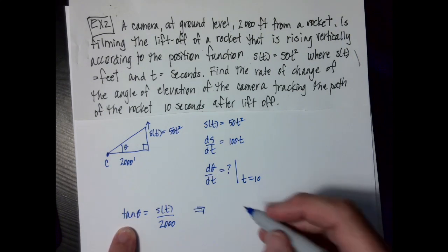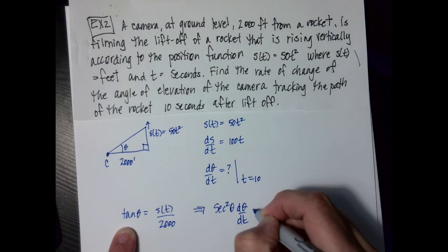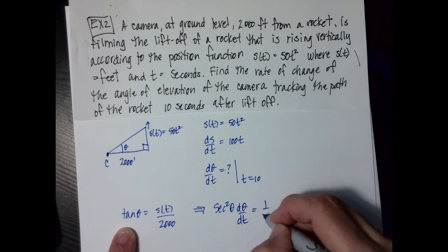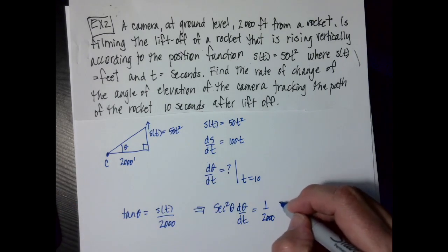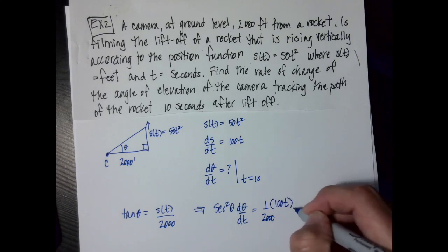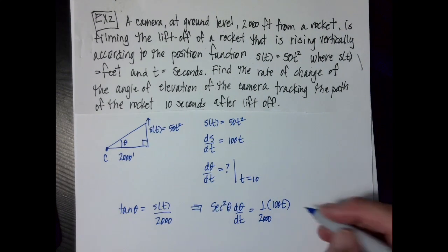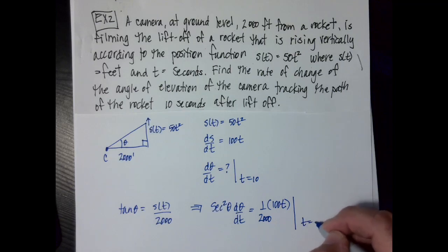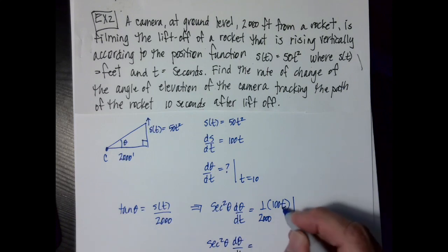So now when I take the derivative, I'm going to get secant squared theta d theta over dt equals 1 over 2,000. I've already taken the derivative, so I'm going to write that as 100 t. The 100 t is my derivative, so it's actually already my ds dt. And I'm going to evaluate that when time equals 10.